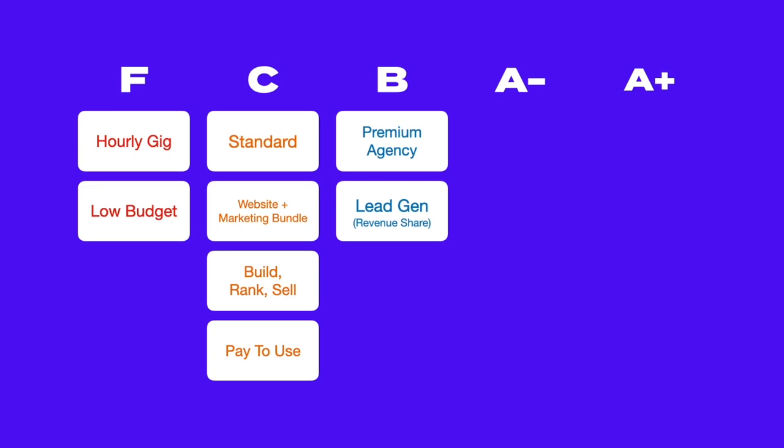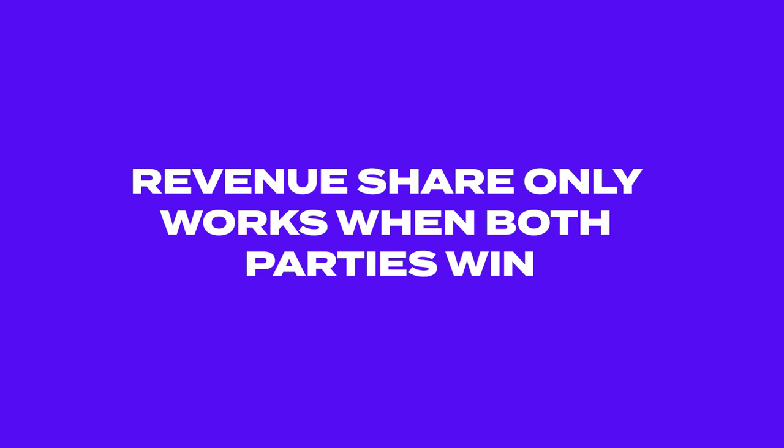The next model is the lead-gen model, which can be extremely profitable — especially if you set up compensation in some sort of revenue share where you get a percentage of the revenue you generate for the client. Revenue share only works if both parties win: you need to guarantee you'll generate revenue, and the client needs to pay your commission. Focus on industries with high margins like HVAC, tractors, solar panels, or security — not cupcakes where margins are razor thin. Find a niche that's somewhat untapped where every sale could get you hundreds or even thousands of dollars in commissions.